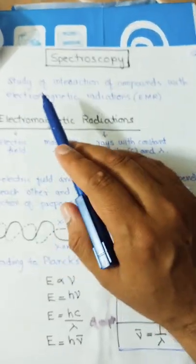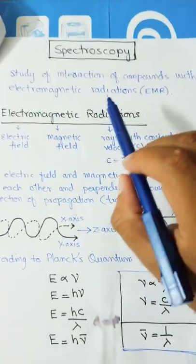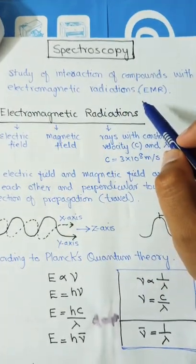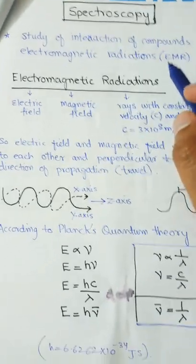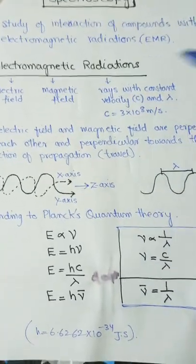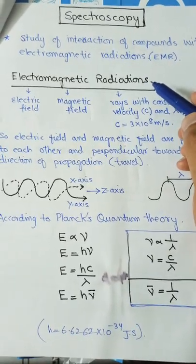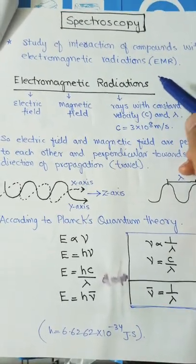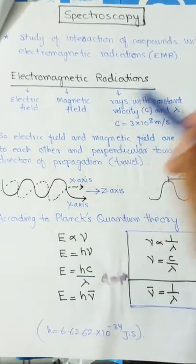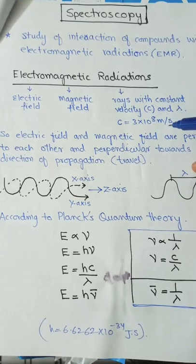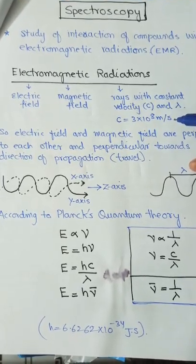The definition of spectroscopy: spectroscopy is the study of the interaction of compounds with electromagnetic radiations. Electromagnetic radiation consists of an electric field and a magnetic field, and these radiations travel at a constant velocity of 3×10⁸ meters per second, with associated wavelength and frequency.